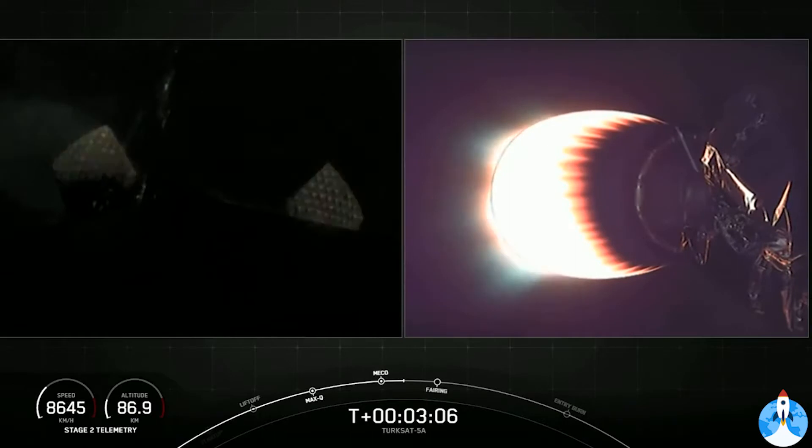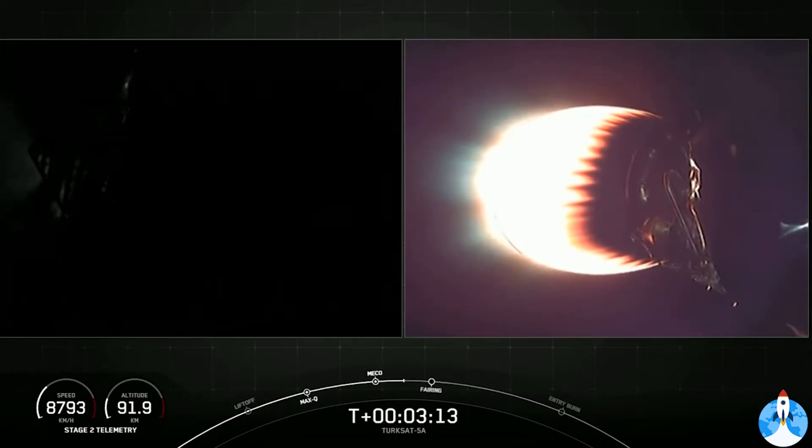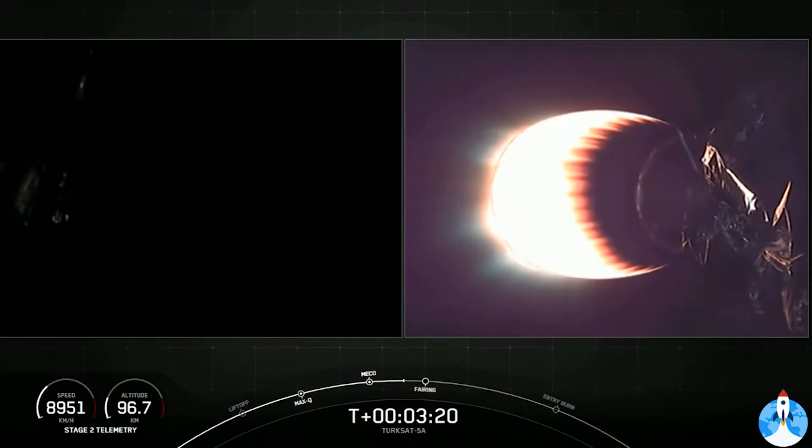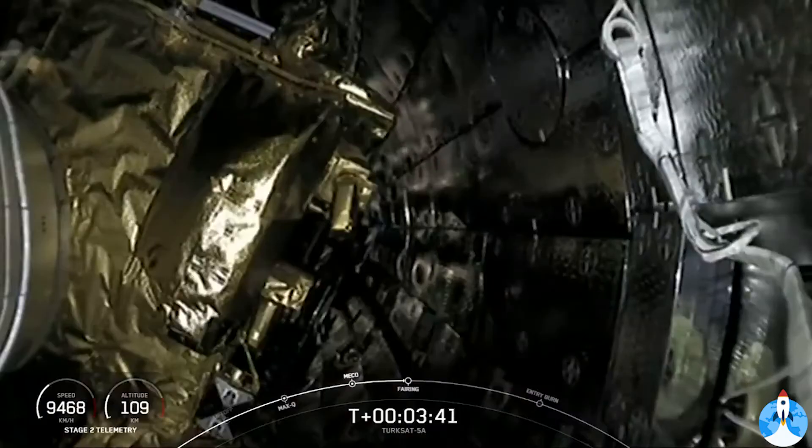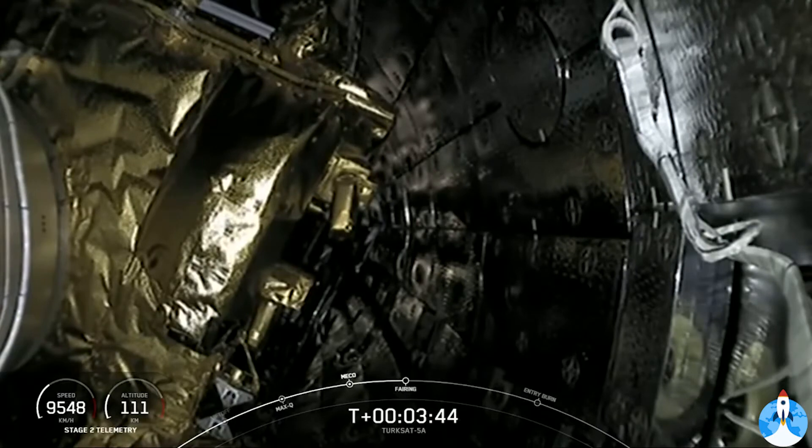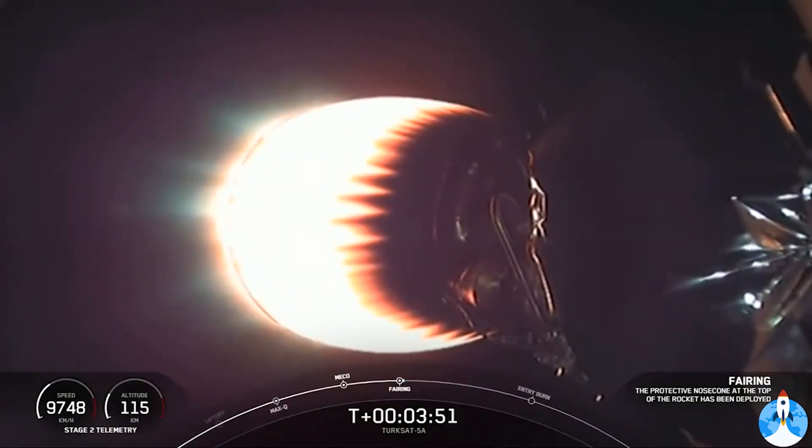Our next milestone is fairing deployment. Those two fairing halves on the top of the second stage are no longer needed, and we'll jettison them to help expose the Turksat-5A satellite to space and attempt to recover those later on. Second stage is on a nominal trajectory. Fairing separation confirmed. And you saw there we just jettisoned our two fairing halves. It's our first good view of Turksat-5A. It's now exposed to space, and those two fairing halves are heading back down to sea level.